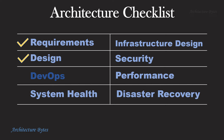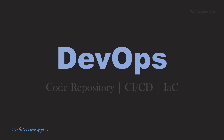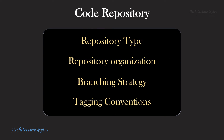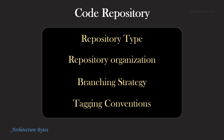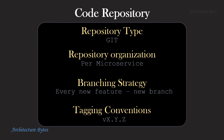Let's look at DevOps now. For the code repository, we have repository type, how it is organized, branching strategy, and tagging conventions. We will be using a Git repository with every microservice in its own repository and a new branch for every new feature. For release tagging, we follow a preset convention.